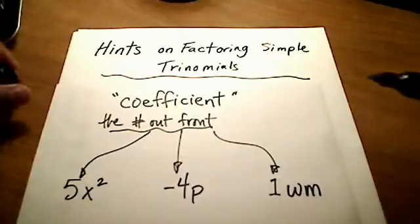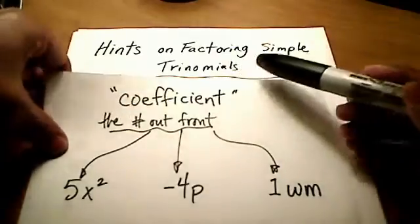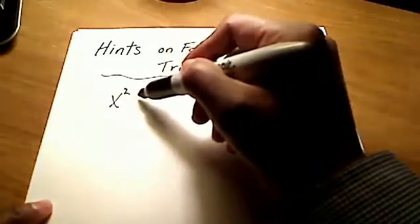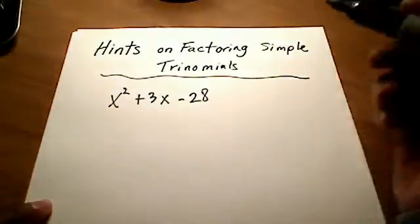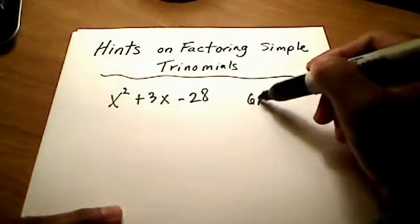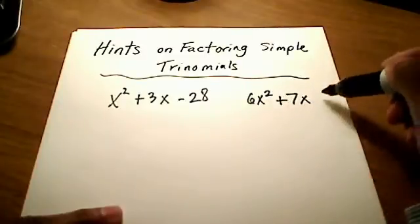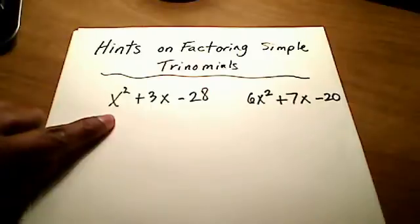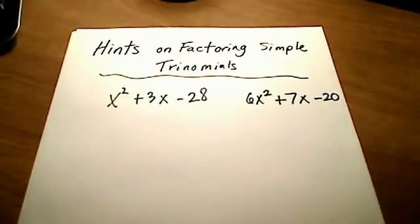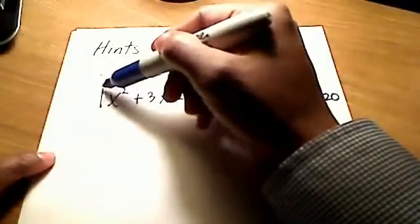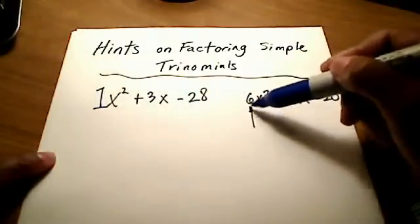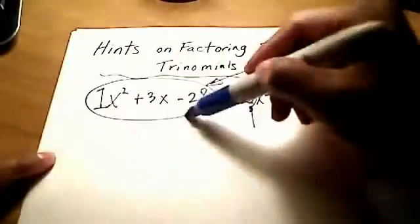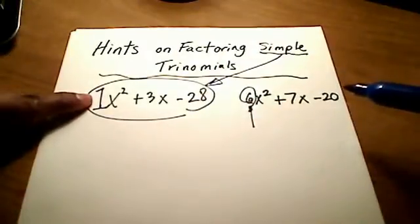It's an understood 1 — you could write it in if you wanted to. A simple trinomial is a trinomial that looks something like x squared plus 3x minus 28. As opposed to something like 6x squared plus 7x minus 20. Notice that for that first trinomial, the leading coefficient — the number out front — is just a 1. When I say simple trinomials, I mean those where the leading coefficient is an understood 1, whether it's written in or not.